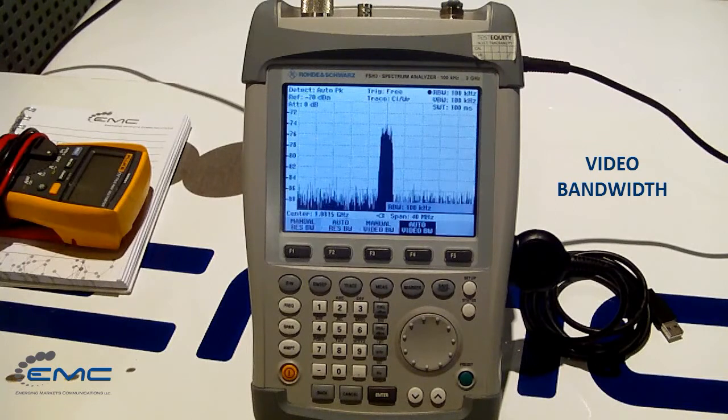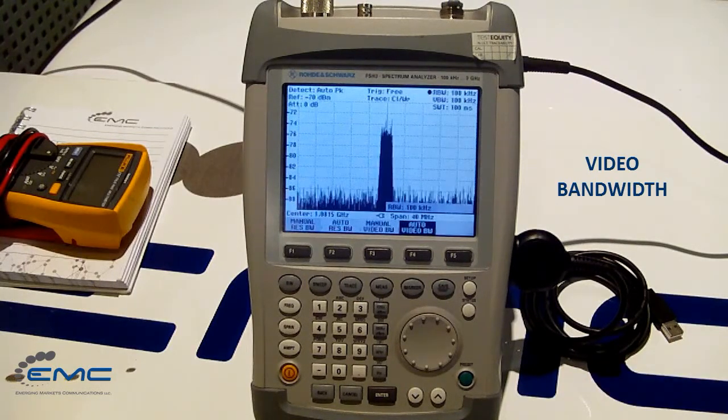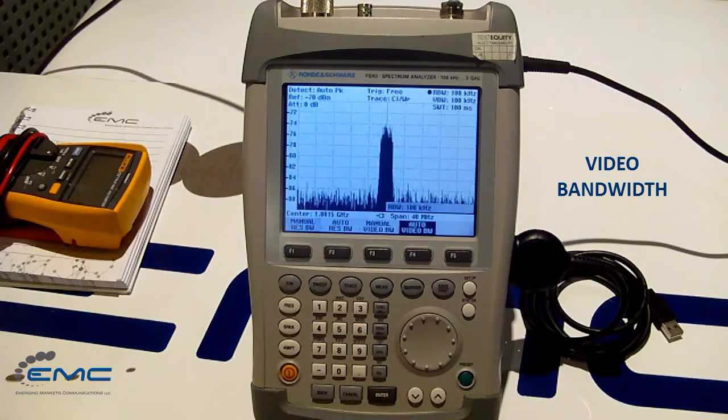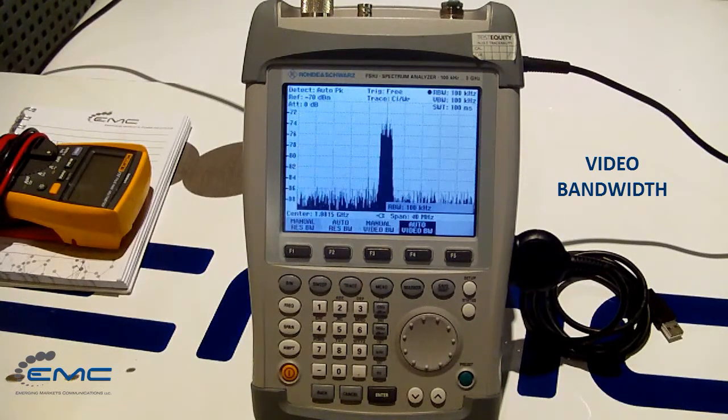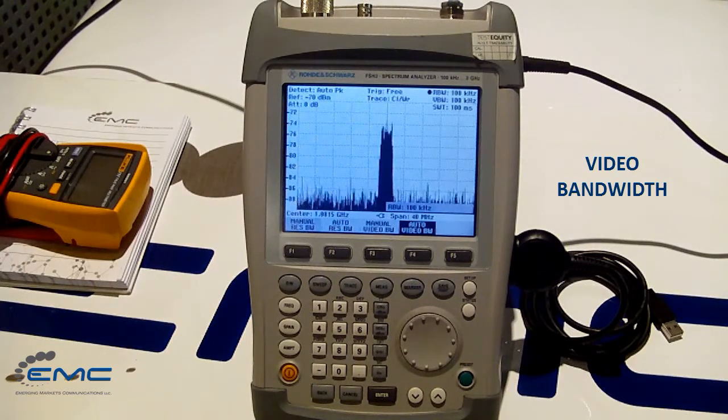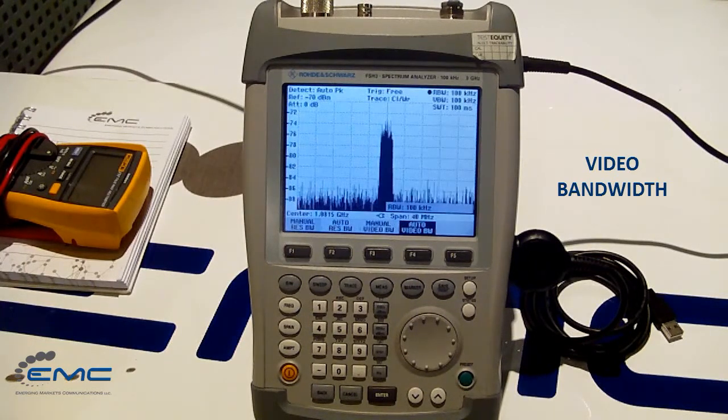If we reduce the video bandwidth, the peak-to-peak variation of the noise is reduced. Smoothing effect of video bandwidth to resolution bandwidth ratio is 3 to 1, 1 to 10, 1 to 100.